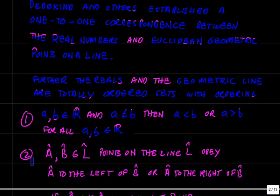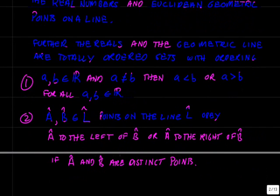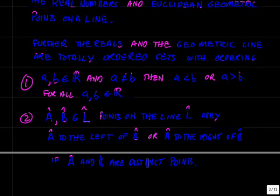What about points on a line? If you have two points, A and B, on the line L, the points on the line L obey an ordering just as well. The point A lies to the left of B, or A lies to the right of B if A and B are distinct points on the line. And this goes for all points A and B on the line. So again, the real numbers and the postulational picture of Euclid match up in this profound way. This ought to be useful.